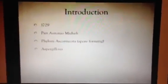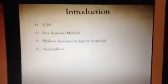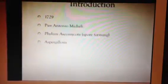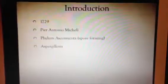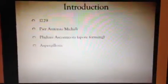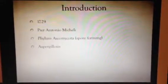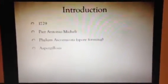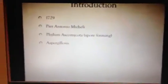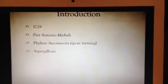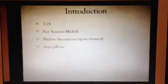My name is Zach Olson, and I will be talking to you about the fungus Aspergillus fumigatus. The genus Aspergillus was first catalogued in 1729 by Italian priest and biologist Pierre Antonio Michelli. It is found in the phylum Ascomycota, which is known for sexual structures called sacs that form spores. When mammals breathe in the spores, it causes a deadly disease known as Aspergillosis.